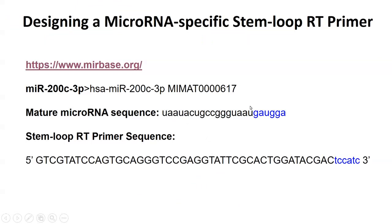Copy and paste the mature sequence into a Word document to work from. The last six nucleotides of the sequence are highlighted in blue. For designing the stem loop RT primer for the cDNA reaction, those last six nucleotides of the primer must be the reverse complement of the last six nucleotides of the mature microRNA sequence. The nucleotides in black caps will be the same for every stem loop primer you design — only those last six nucleotides change. Also, replace any U's in the RNA sequence with T's, since primers are made of DNA.